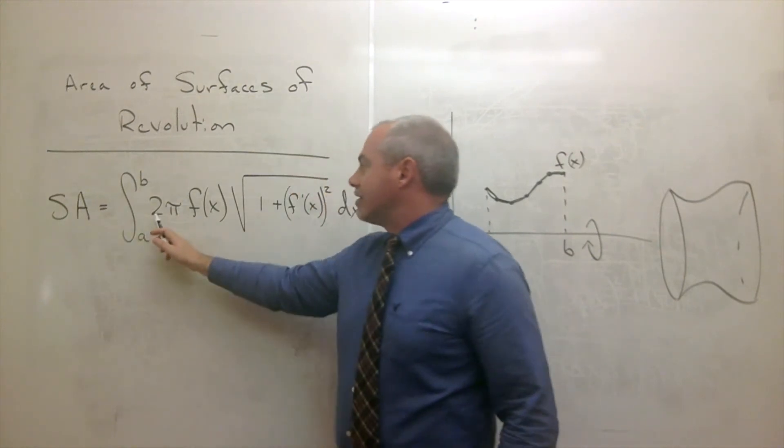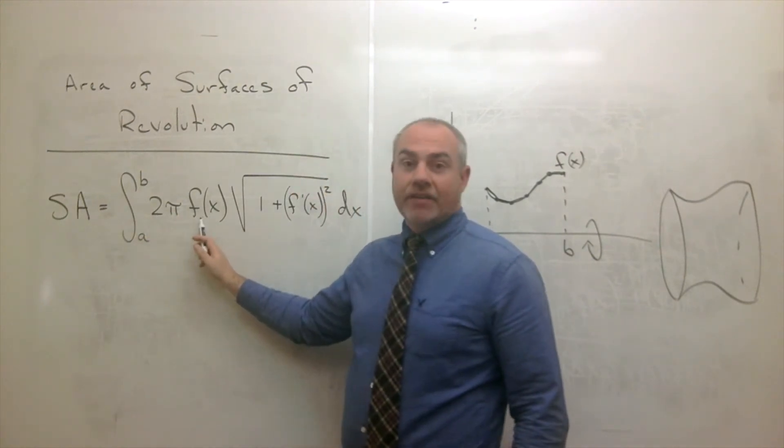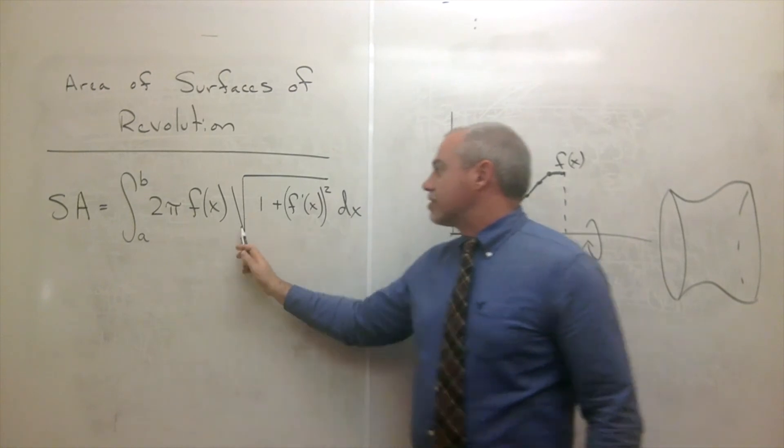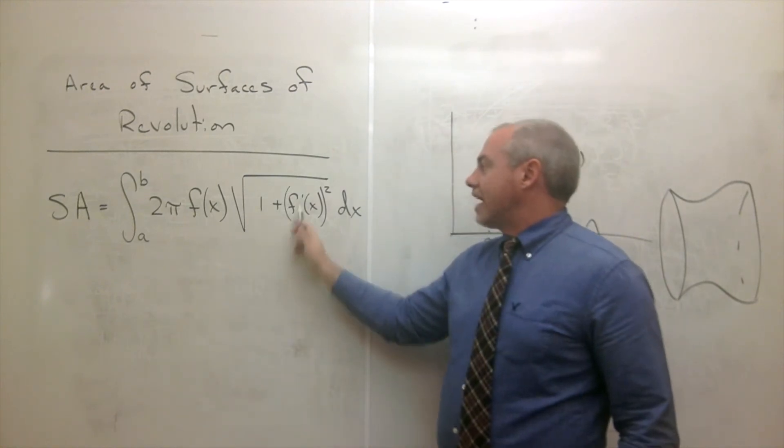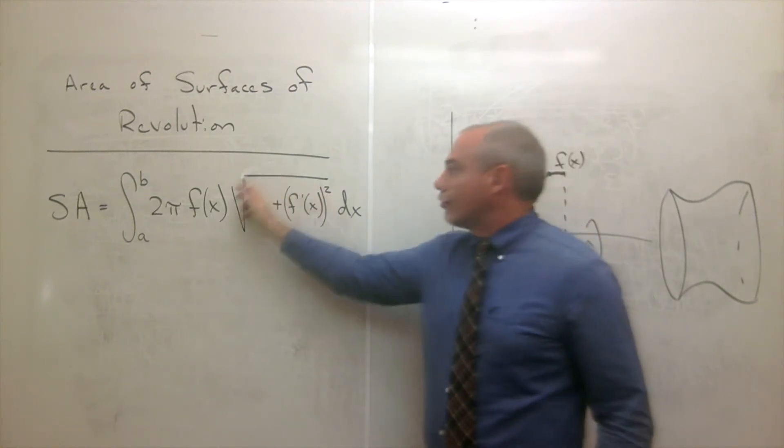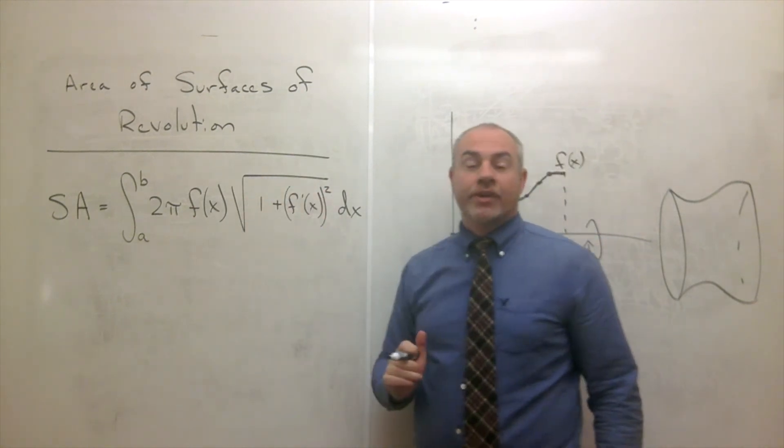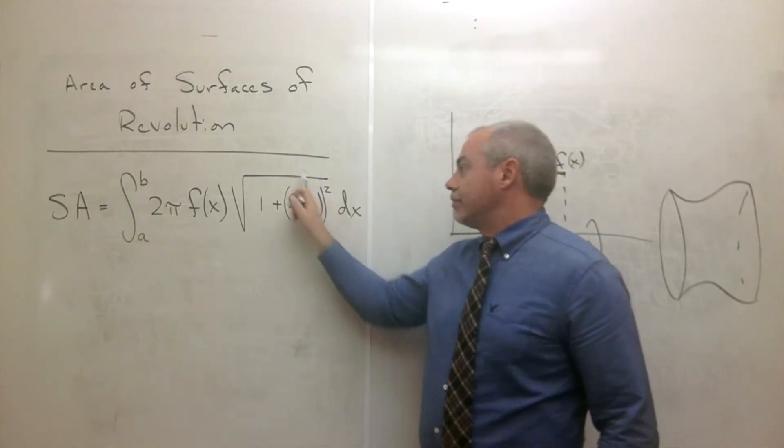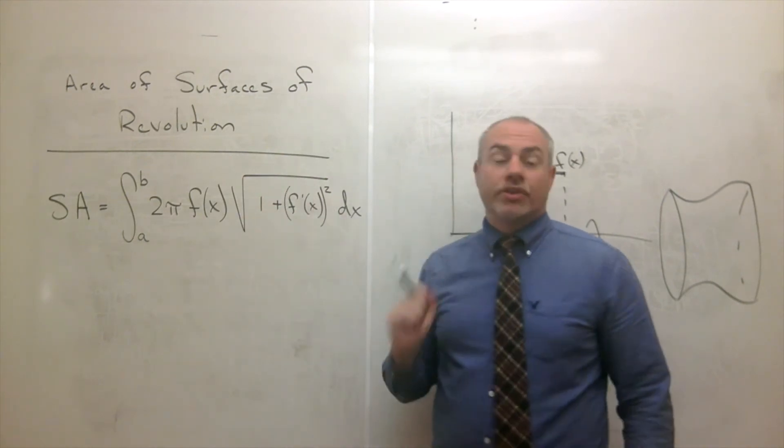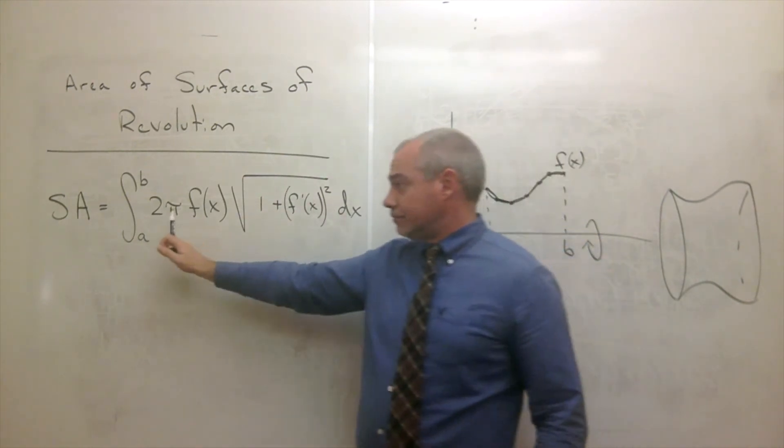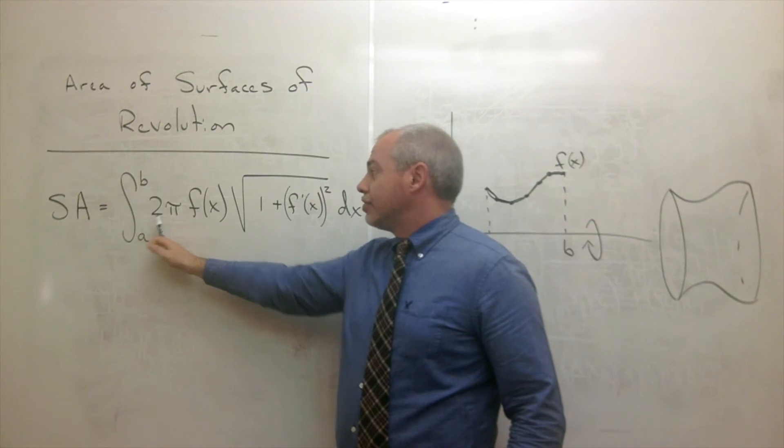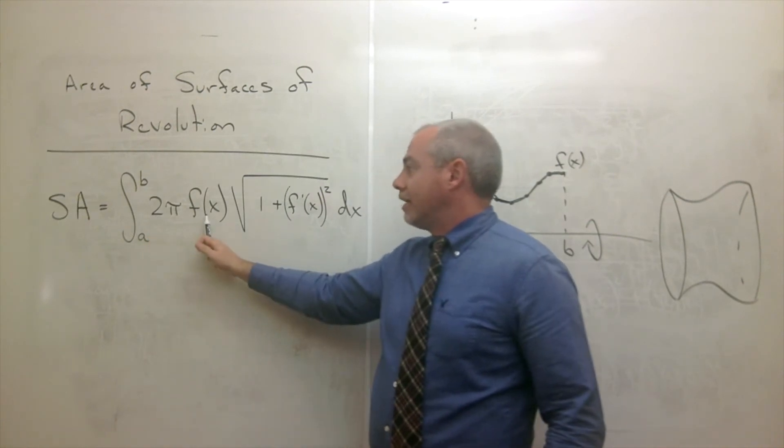And what goes inside is 2π times f of x, times the square root of 1 plus f prime of x squared. And you'll recognize this square root and everything inside the square root is exactly what we put into an integral for arc length. So the only change here is we get this extra 2π f of x.